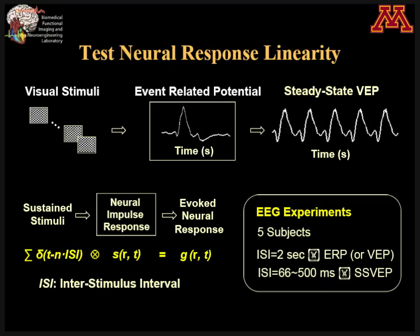So we have done a human study. In this case, we give visual stimulation. We can record something called the human-related potential — if it's visual, that's the typical visual-evoked potential. Or you can speed it up by increasing the stimulation frequency, and then you get something called steady-state visual-evoked potential, or SSVEP.